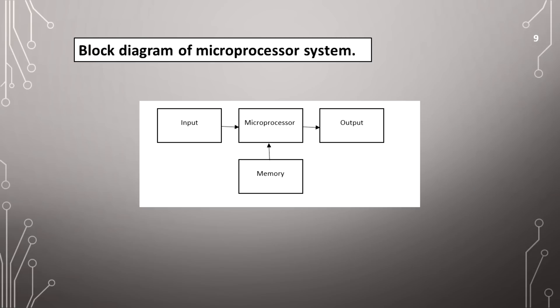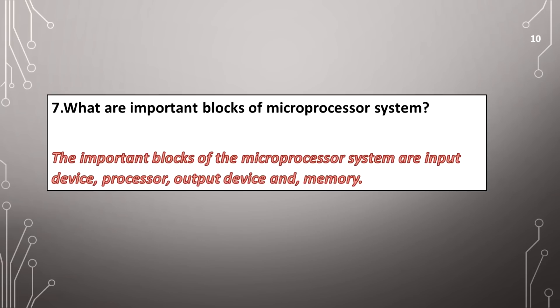Block diagram of microprocessor system. What are the important blocks of the microprocessor system? The important blocks of the microprocessor system are input device, processor, output device, and memory.